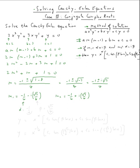So my alpha is negative one over four, and my beta is square root of seven over four.